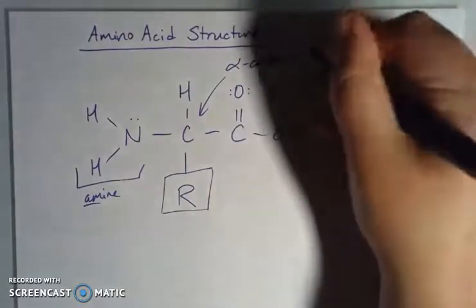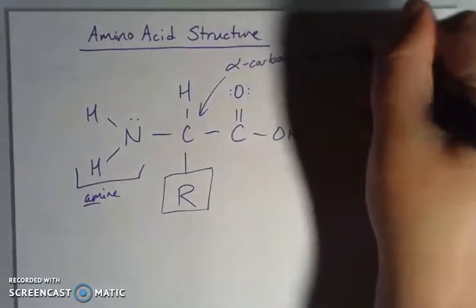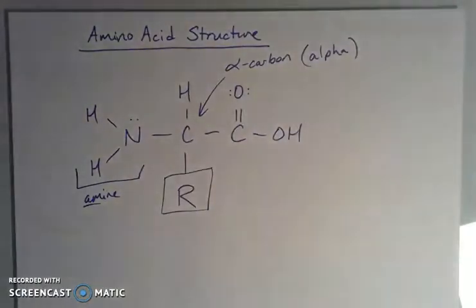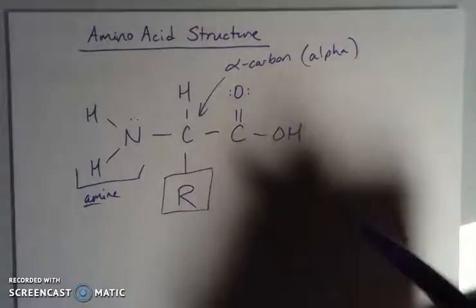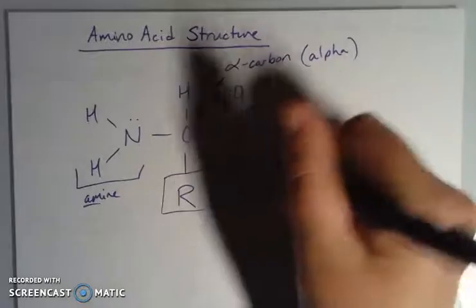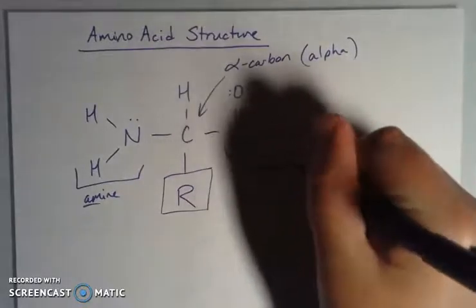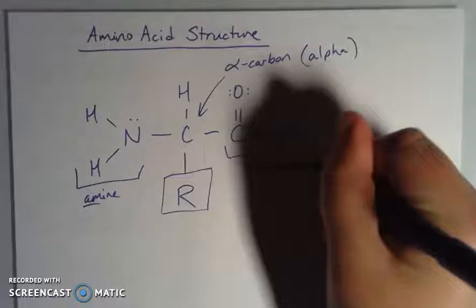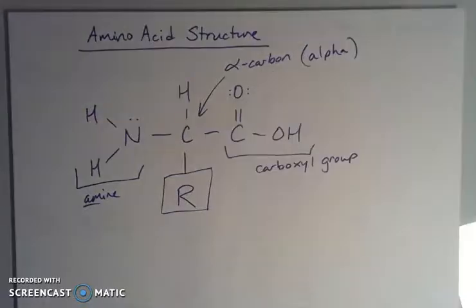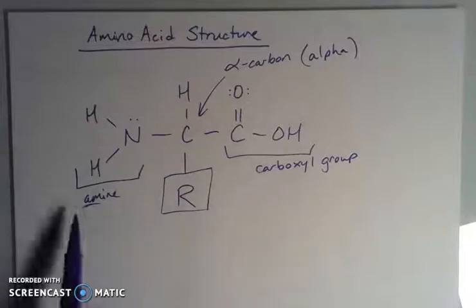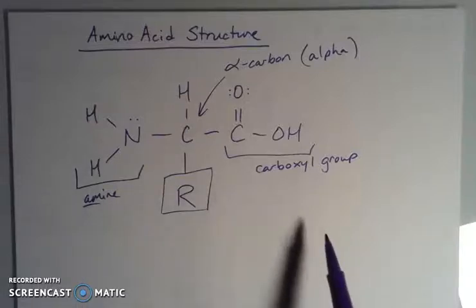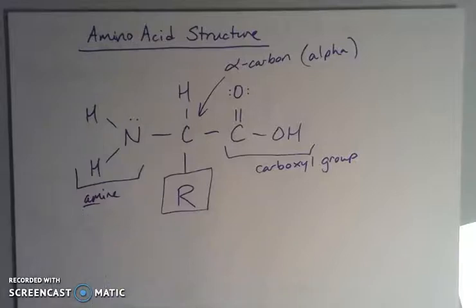This carbon is called the alpha carbon. That's a Greek alpha, which is the first letter of the Greek alphabet. The alpha carbon is also connected to a hydrogen and on the other side to a carboxylic acid or carboxyl group. So carboxyl on one side, amine on the other. Carboxylic acid gives you the acid part and the amine gives you the amino part, hence amino acids.